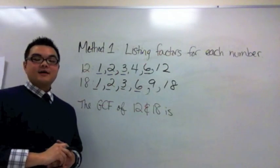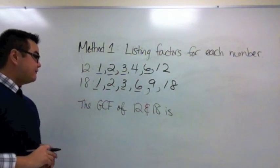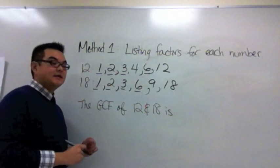Of those common factors the greatest one is 6, so therefore the GCF of 12 and 18 is 6.